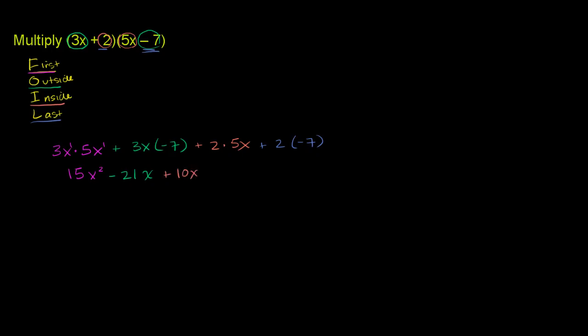And then finally, you have this term here in blue. 2 times negative 7 is negative 14. And we aren't done yet. We can simplify this a little bit. We have two like terms here. Let me find a new color.